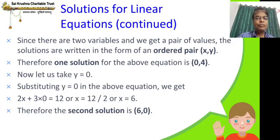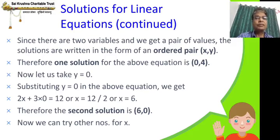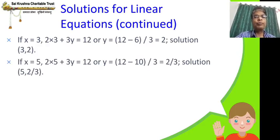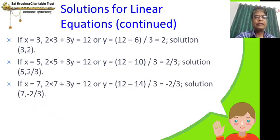Are there more solutions? Yes — there are multiple solutions. We can try other values for x. If x equal to 3: 2 into 3 plus 3y equal to 12, giving y equal to 2, so the solution is 3 comma 2. Every time we substitute any value for x or y, the equation becomes single-variable and we can find the other variable. If x equal to 5, y equal to 2 by 3. If x equal to 7, y equal to minus 2 by 3.